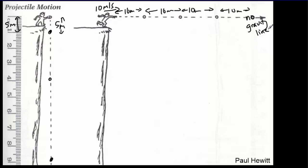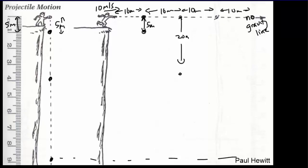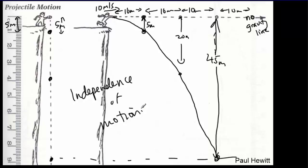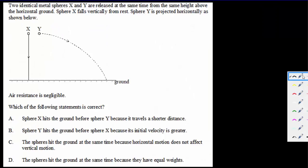Now we're going to turn gravity back on. What gravity does is bring it down by exactly those same distances in the same amount of time. After 1 second, gravity brings it down 5 meters. After 2 seconds, down 20 meters. After 3 seconds, down 45 meters. So you can see the shape of the flight of the ball is parabolic. We speak of this as independence of motion — the vertical motion doesn't affect the horizontal motion; they work independently of each other.